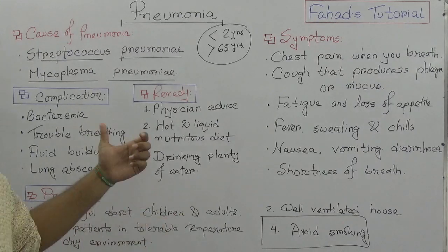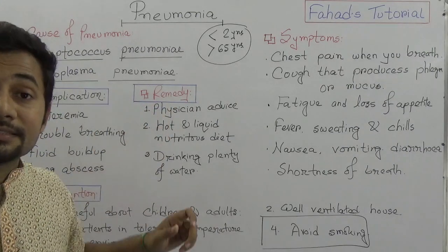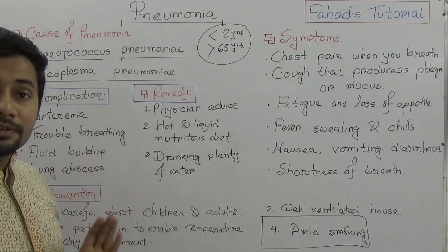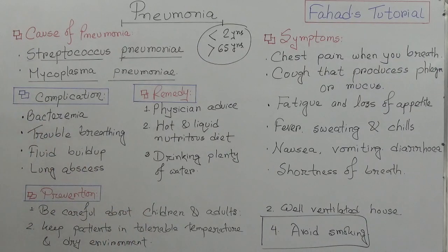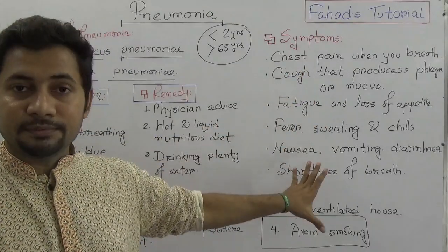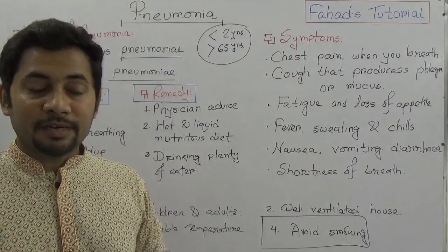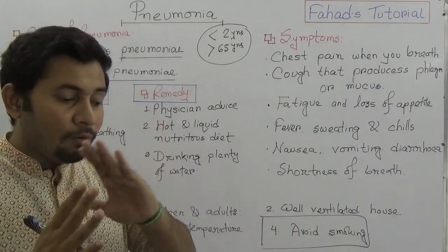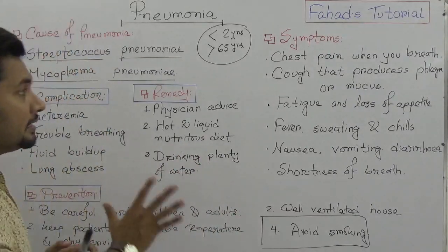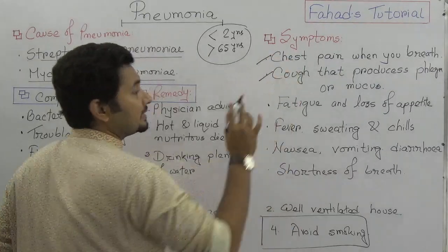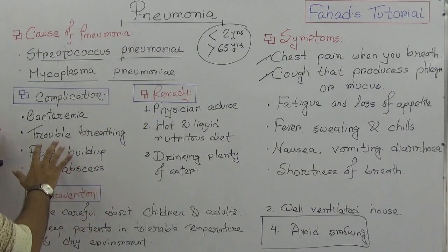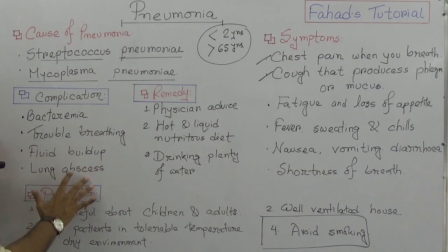To recap: what is pneumonia? The causing agents are Streptococcus pneumoniae and Mycoplasma pneumoniae — remember these scientific names. Then consider the symptoms: since it is a lung disease, it shares some similarities with other lung diseases in this chapter, but these symptoms should mainly be noted. As for complications: bacteria can spread into the blood — that is called bacteremia — trouble breathing will occur, and lung abscess is also a complication.